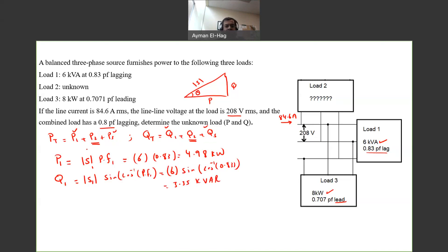We now found P1 and Q1. Let's find P3 and Q3. P3 is already given to us, 8 kilowatts. When you look here, tan theta equals Q over P.